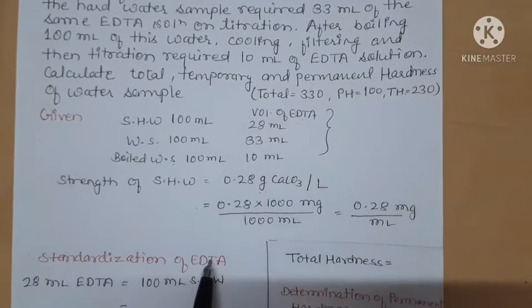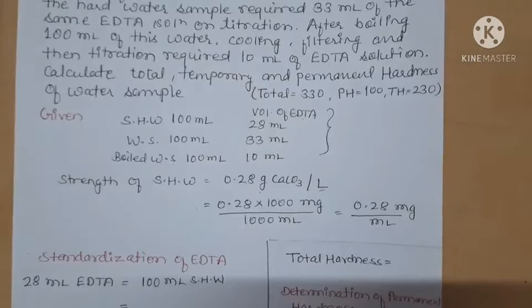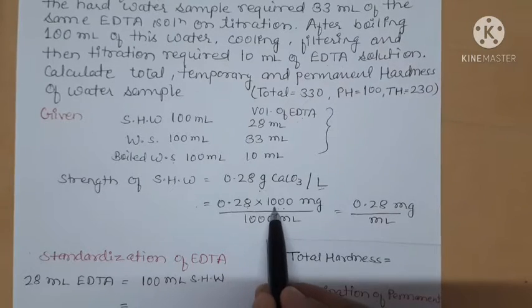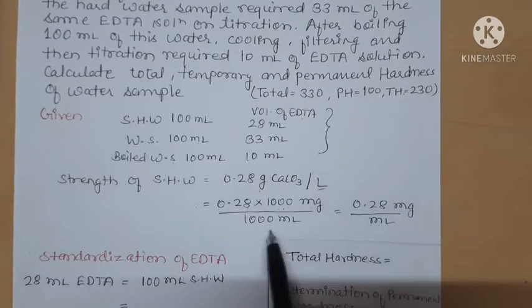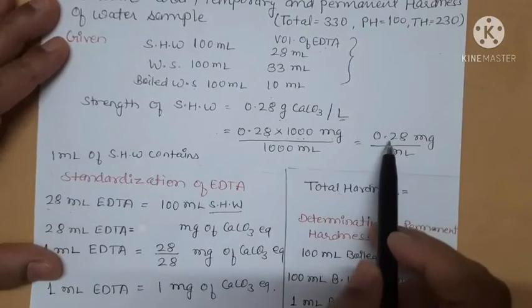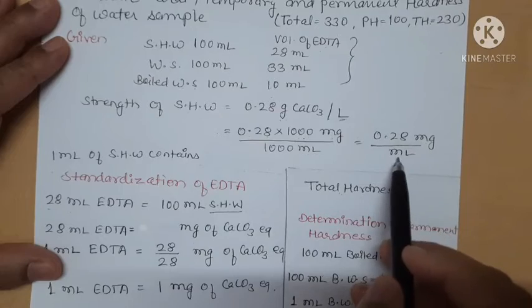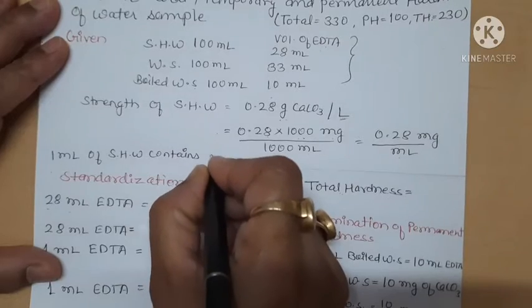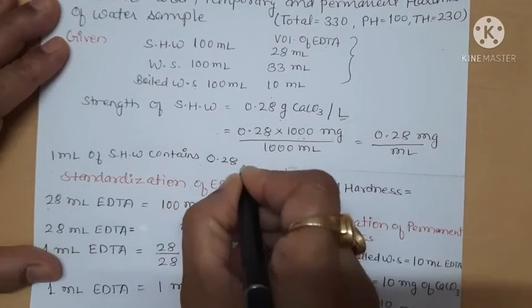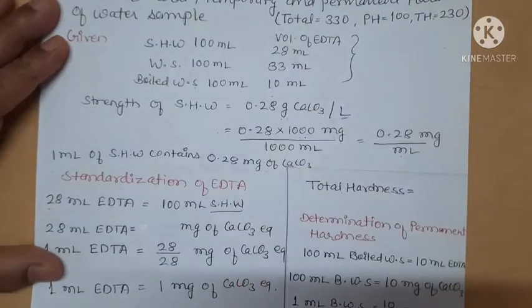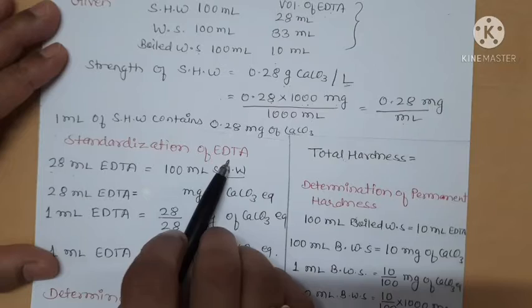We will convert grams to milligrams and liters to milliliters. So 0.28 g per liter becomes 0.28 × 1000 mg per 1000 ml, which equals 0.28 mg per ml. This means 1 ml of standard hard water contains 0.28 mg of CaCO3.